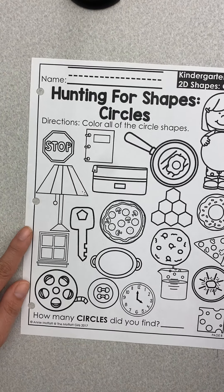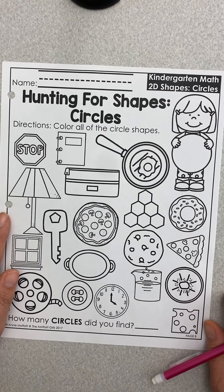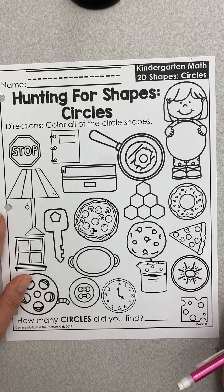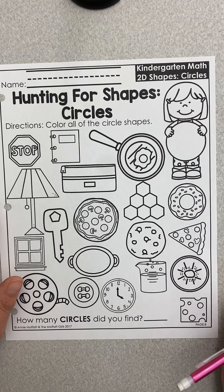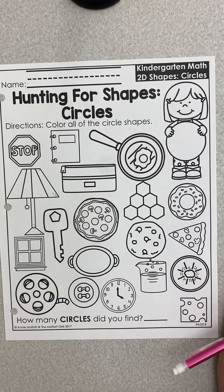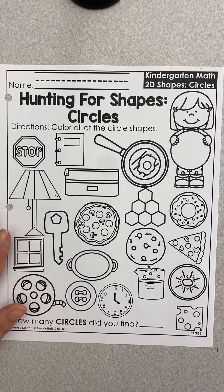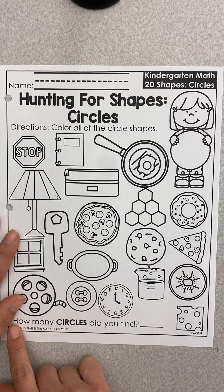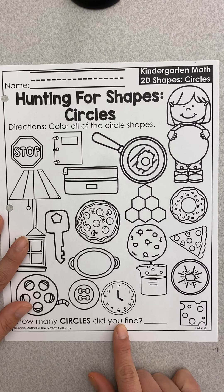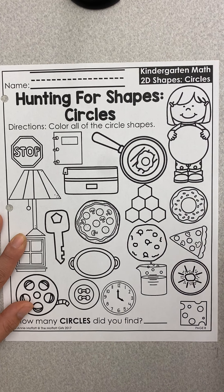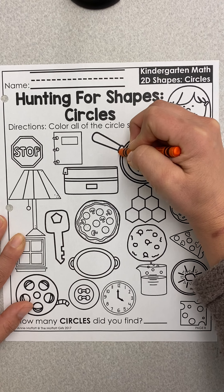When you finish that sheet, we're going to do the hunting for shapes — circles page. Color all of the circle shapes. A circle has zero sides and it has zero corners. You can choose a color you'd like, and switch colors if you would like — it's really up to you. We are also counting how many circles we find on this page, but they're a little bit harder to find here, so we're just going to outline the circles.